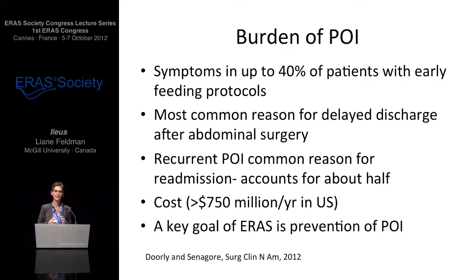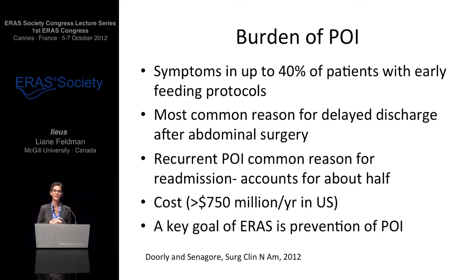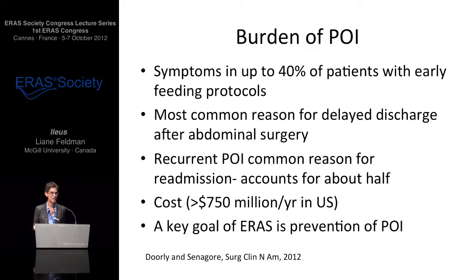Postoperative ileus is a burden on our patients. There are definition issues around where ileus ends and postoperative nausea and vomiting begins, but GI tract symptoms — nausea, vomiting, abdominal distension — occur in about 40% of our patients on pathways. It remains the most common reason for delayed discharge after abdominal surgery, and recurrent symptoms are one of the most common reasons for readmission — a very expensive problem.